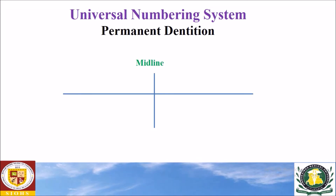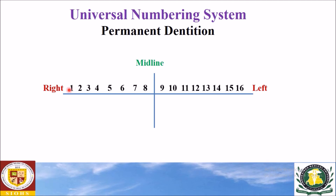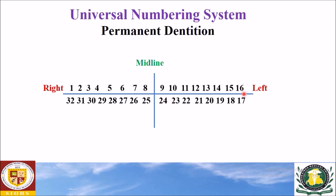Universal numbering system for the permanent dentition. The permanent teeth are numbered from 1 to 16 in the maxillary arch. Numbering starts with 1 from the right side — number 1 is for the maxillary right third molar — through to 16 for the maxillary left third molar. For the mandibular arch, numbering starts from the left side at number 17, going clockwise through to 32 for the lower right third molar.